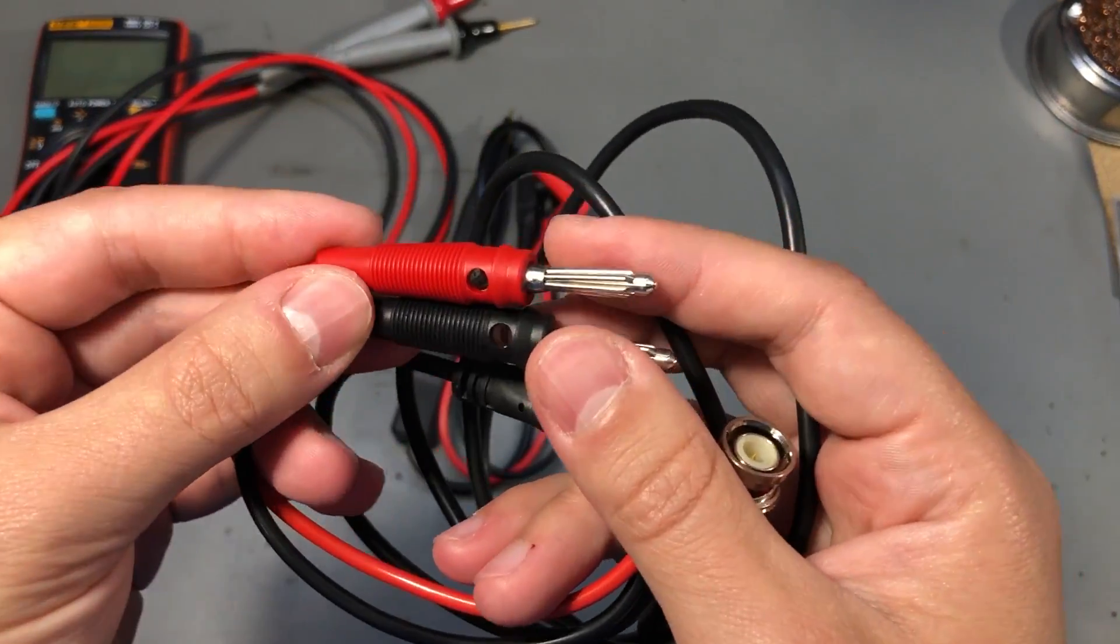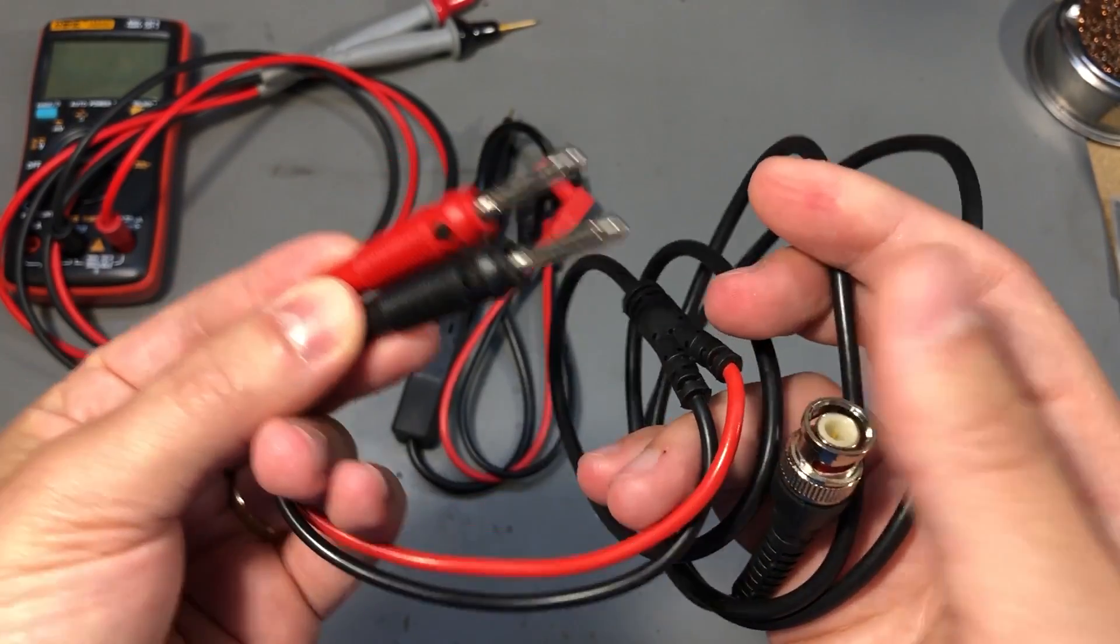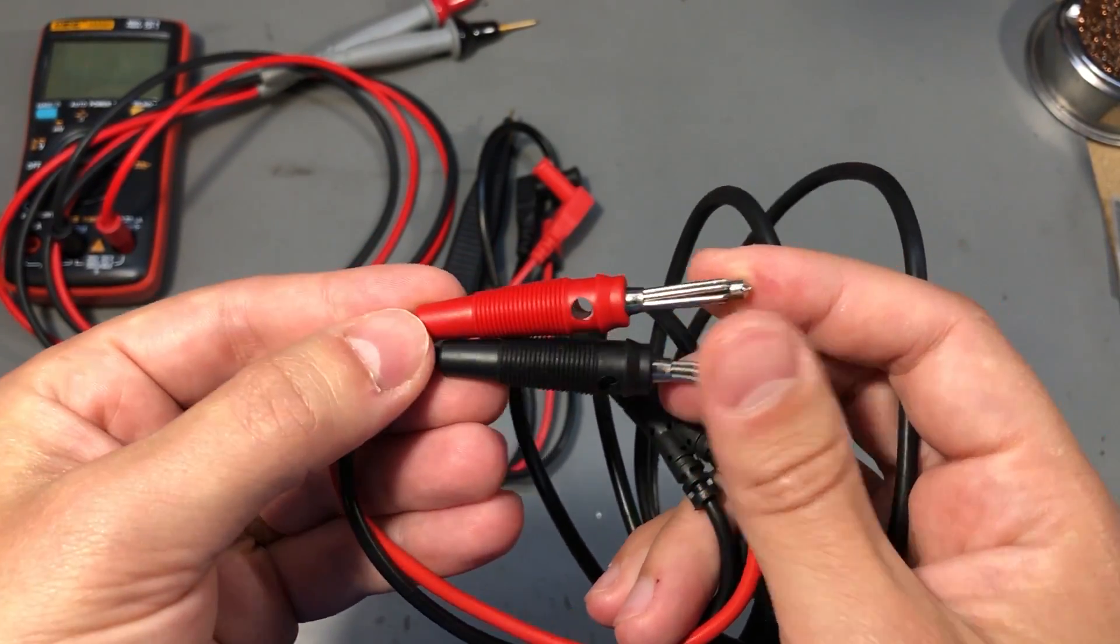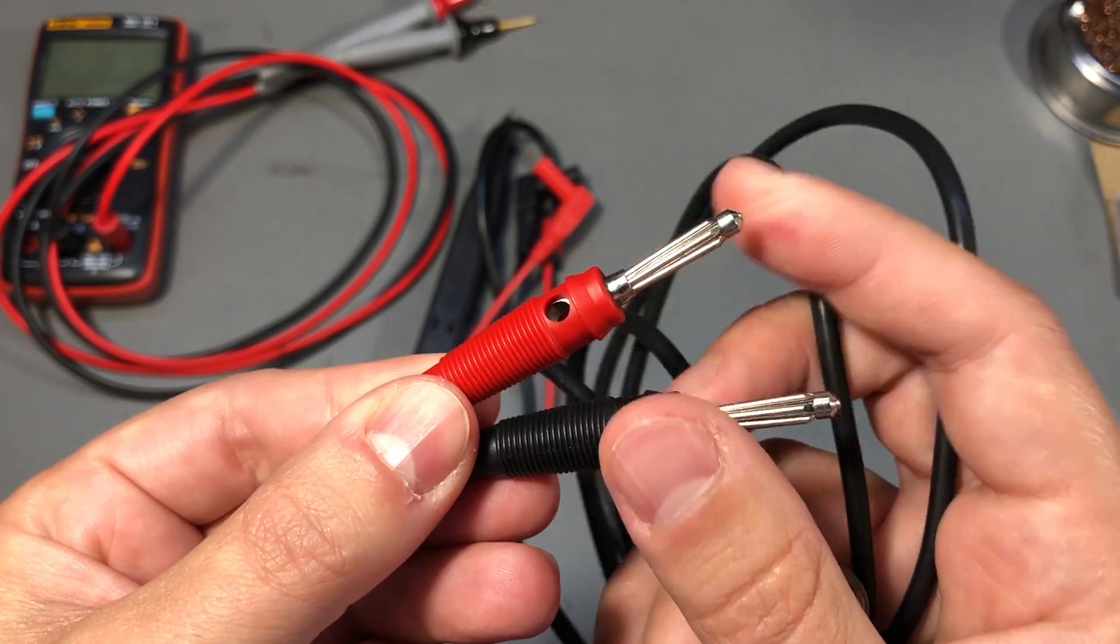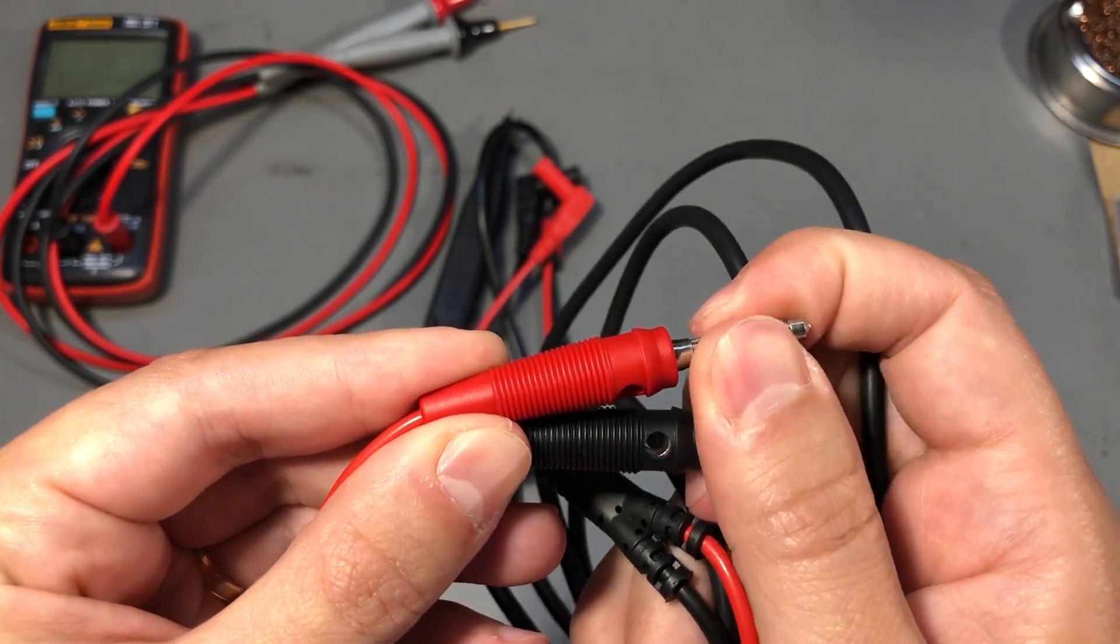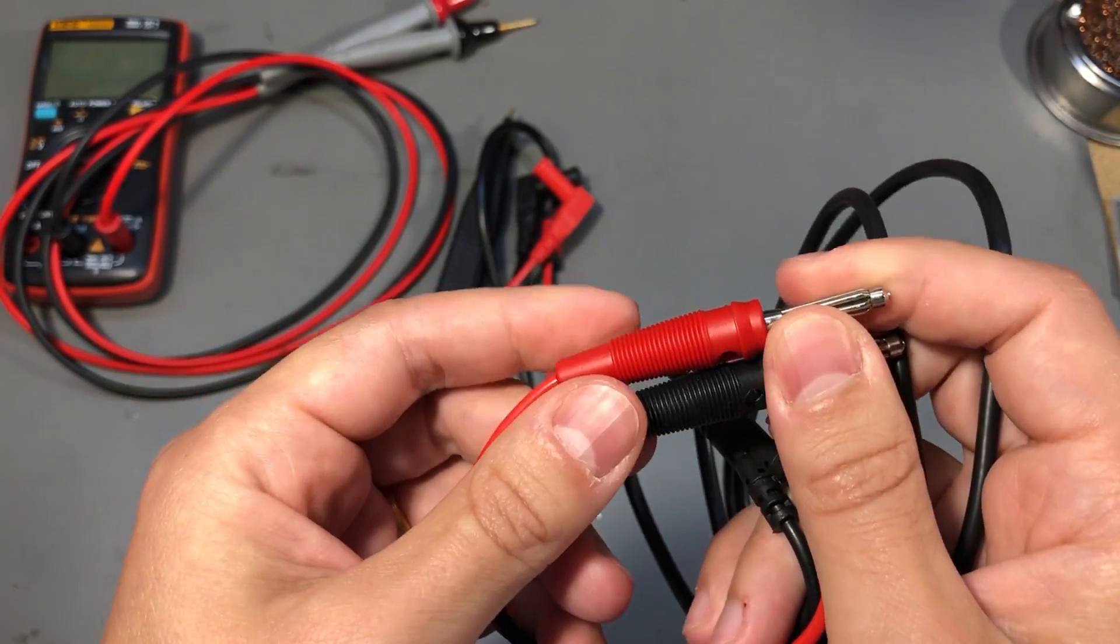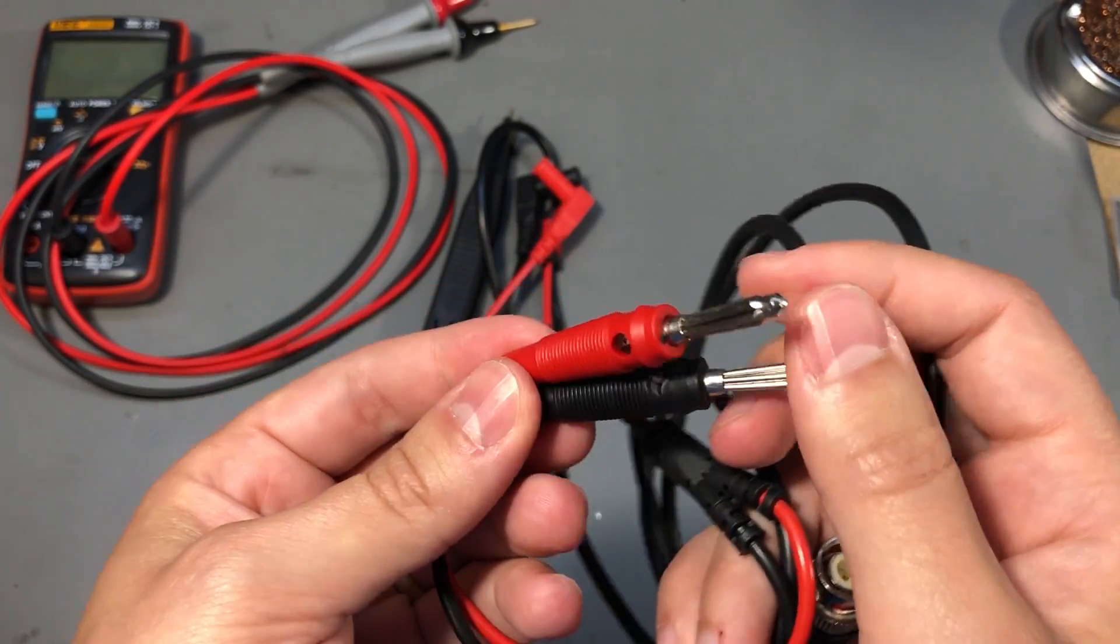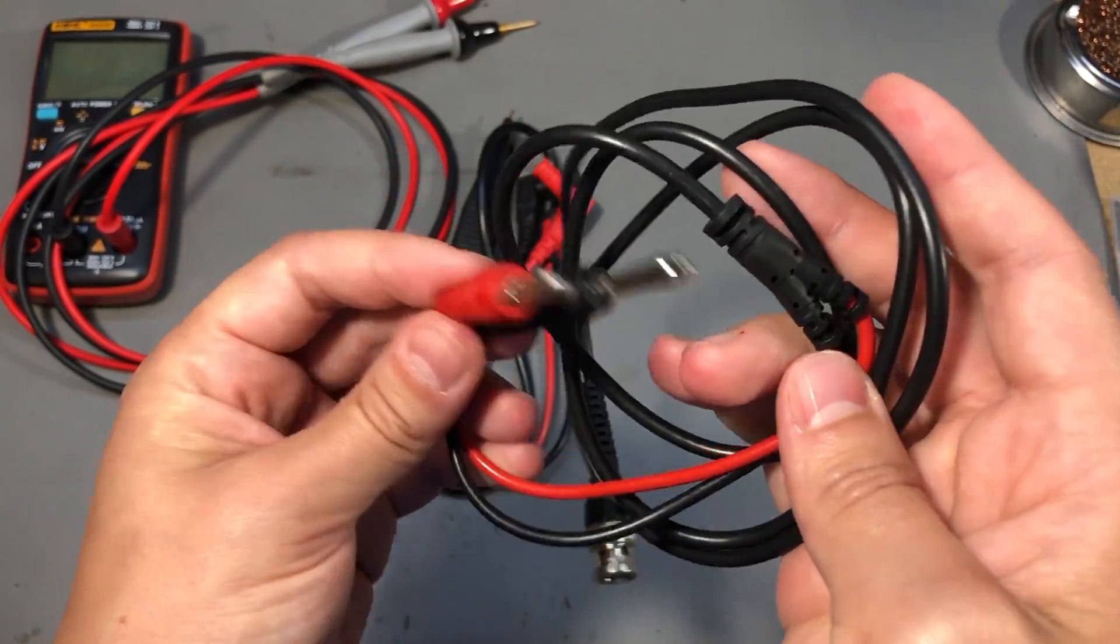The banana connectors are not super high quality and you wouldn't expect it for something you get for cheap from AliExpress, but I can say they are certainly of decent quality. They are the type that make a very tight fit inside the sockets and there are no moving parts in here that could get wear and then you would end up with a loose connection. So I think this will get the job done very nicely.